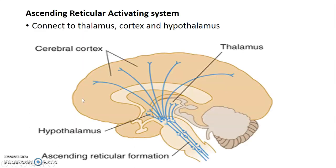The ascending reticular activating system consists of fibers that connect the reticular system to structures above the brainstem, like the thalamus, cortex, and hypothalamus. This picture shows the reticular connections to the hypothalamus, thalamus, and cerebral cortex.